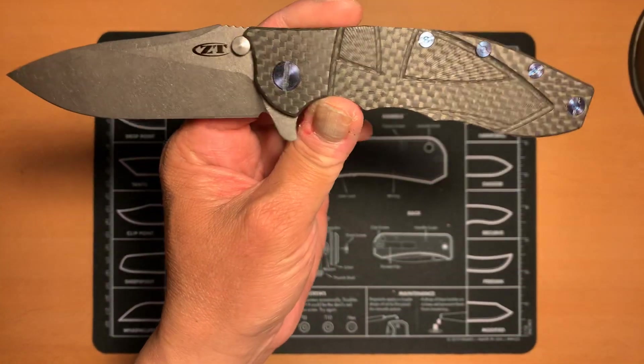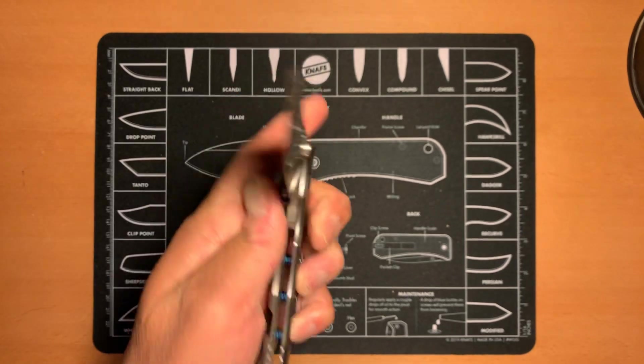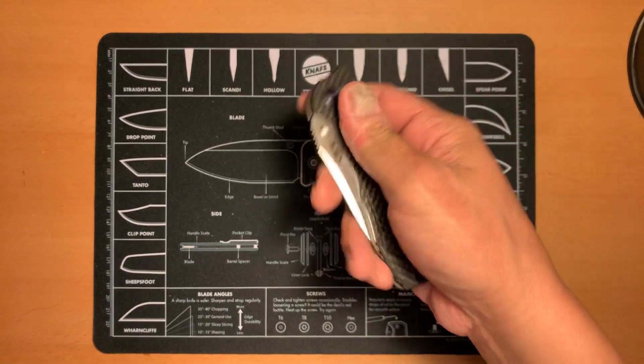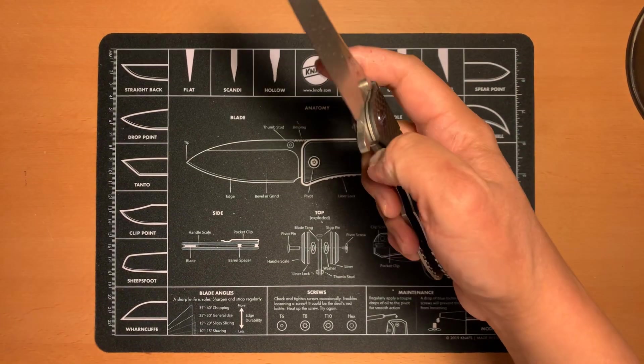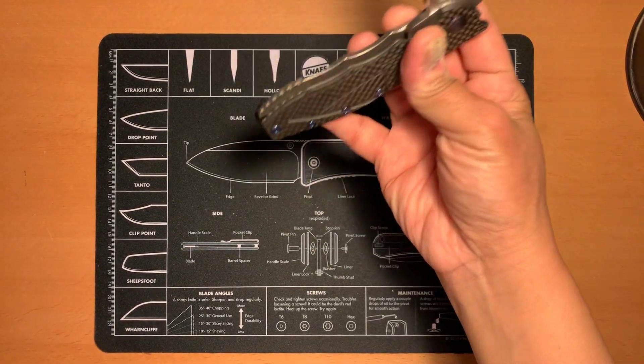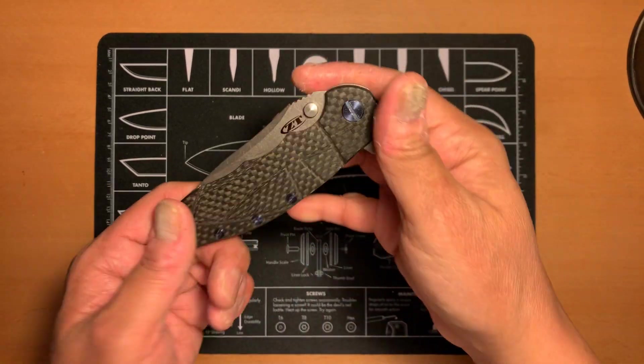The action was really, really nice. It's a very smooth knife running on KVT ball bearing system. As you can see right there, a little jerk, and the thing falls, pretty much falls shut. But, I mean, it's just, you can't complain with that.